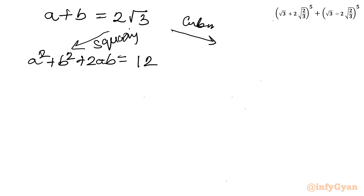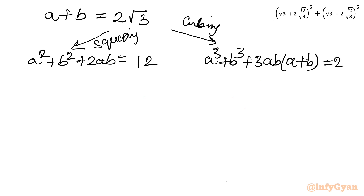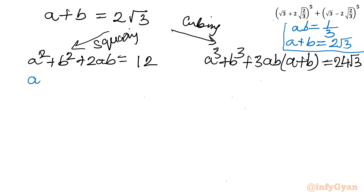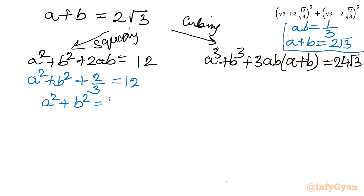For the cube: a³ + b³ + 3ab(a + b) = 24√3, since 2³ × √3³ = 8 × 3√3 = 24√3. Now putting ab = 1/3, the squaring equation gives a² + b² + 2/3 = 12, so a² + b² = 12 − 2/3 = 34/3.